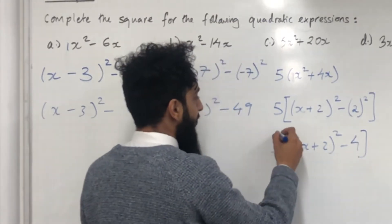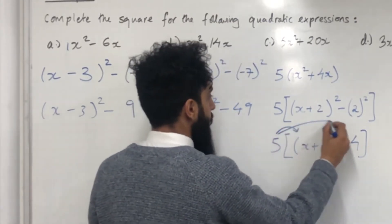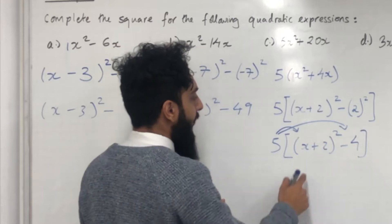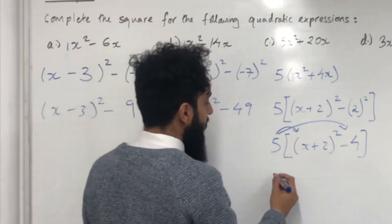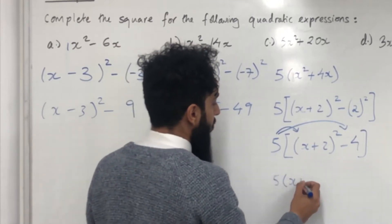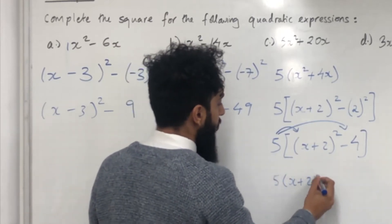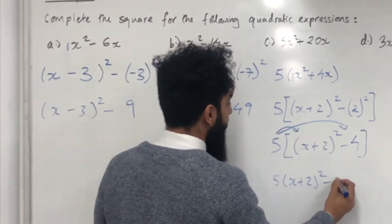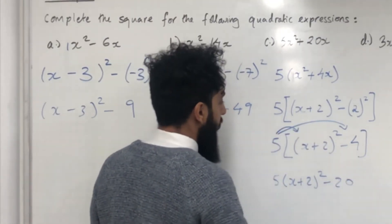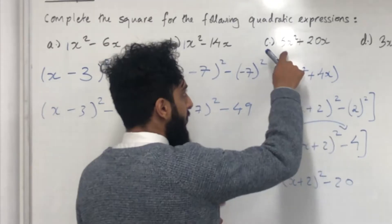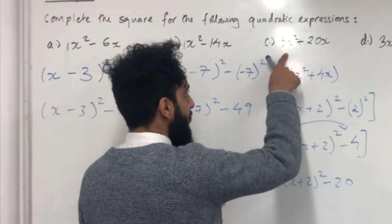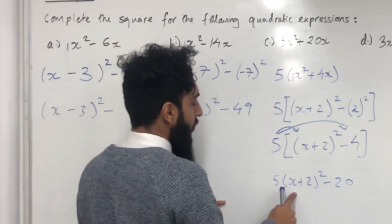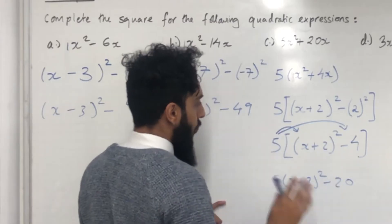Now we can expand. 5 multiplied by (x + 2)² is just 5(x + 2)². 5 multiplied by negative 4 is negative 20. So completing the square on 5x squared plus 20x gives 5(x + 2)² − 20.